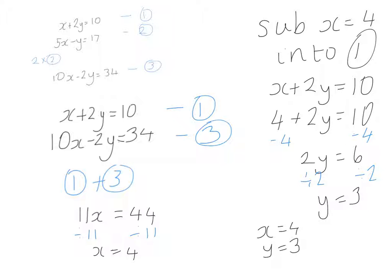You can check your answer by substituting these values into equation two. So 5 times x, which is 5 times 4, is 20, take away y which is 3, gives 17. That's correct.